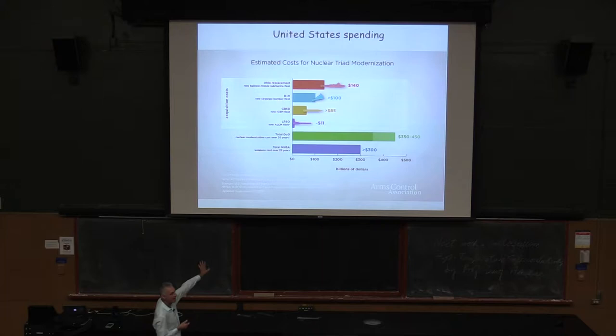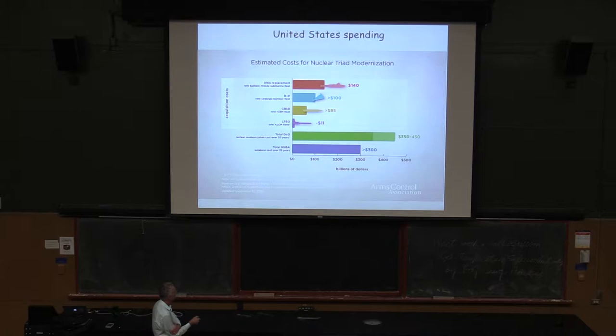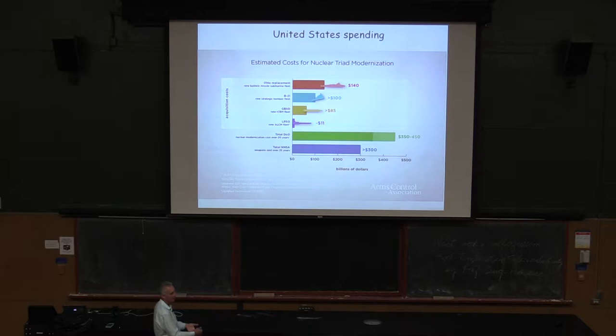The last Panofsky slide is U.S. spending on nuclear weapons modernization. The important thing is these units are billions of dollars — over 25 years. If you add the Department of Defense budget and the DOE budget, you're getting on the order of a trillion dollars. The U.S. government is essentially spending and planning to spend $1 trillion on nuclear weapons — something you're not really going to use in a war, we hope — but it's a trillion dollars that you could in principle be spending elsewhere.